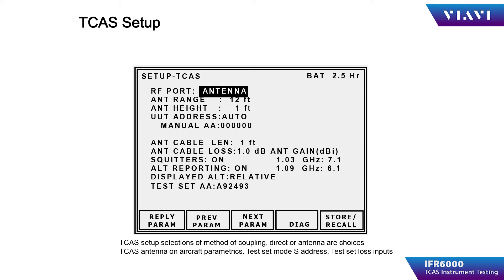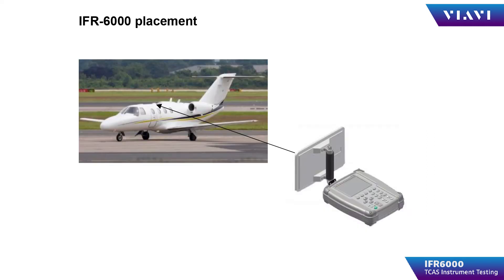Input the length and loss of the coaxial cable being used to connect the IFR 6000 flat blade antenna to the test set antenna connection. Squidders should be set to ON. Altitude reporting is set to ON. Displayed altitude is either relative or absolute — relative would be relative to the altitude of the aircraft being tested. A location for the IFR 6000 should be chosen so that there are no metallic obstructions between the IFR 6000 and the aircraft TCAS antenna.